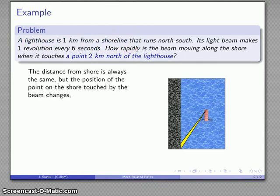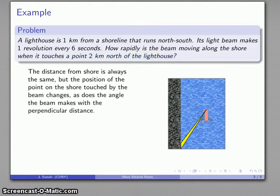On the other hand, where the beam hits the shoreline does change over time so that position should be a variable. The other thing that changes is the angle that the beam makes with some perpendicular distance. If I imagine this perpendicular distance to the shoreline, this angle changes over time.